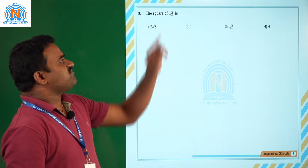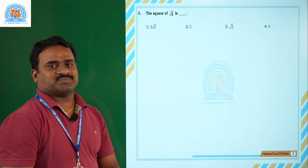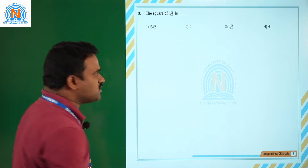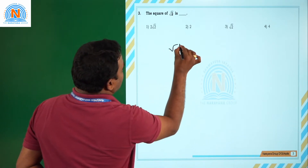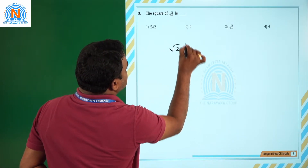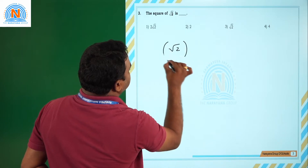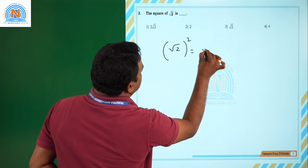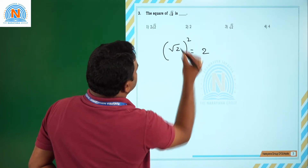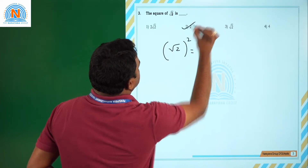Square of √2: simply squaring √2 gives us 2. So our answer is 2.